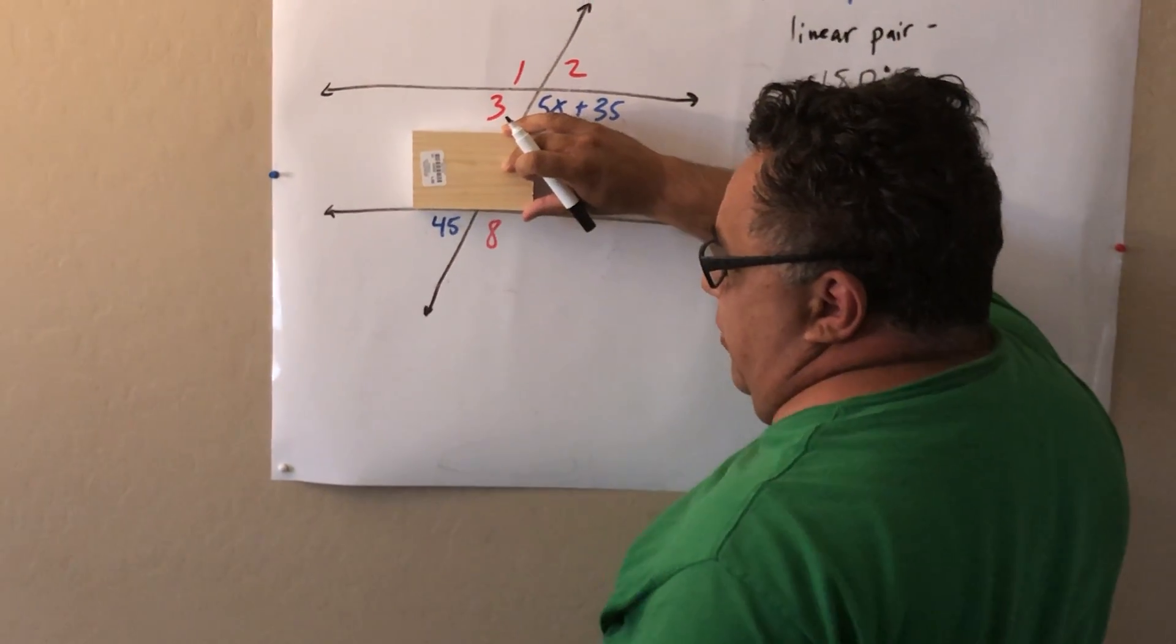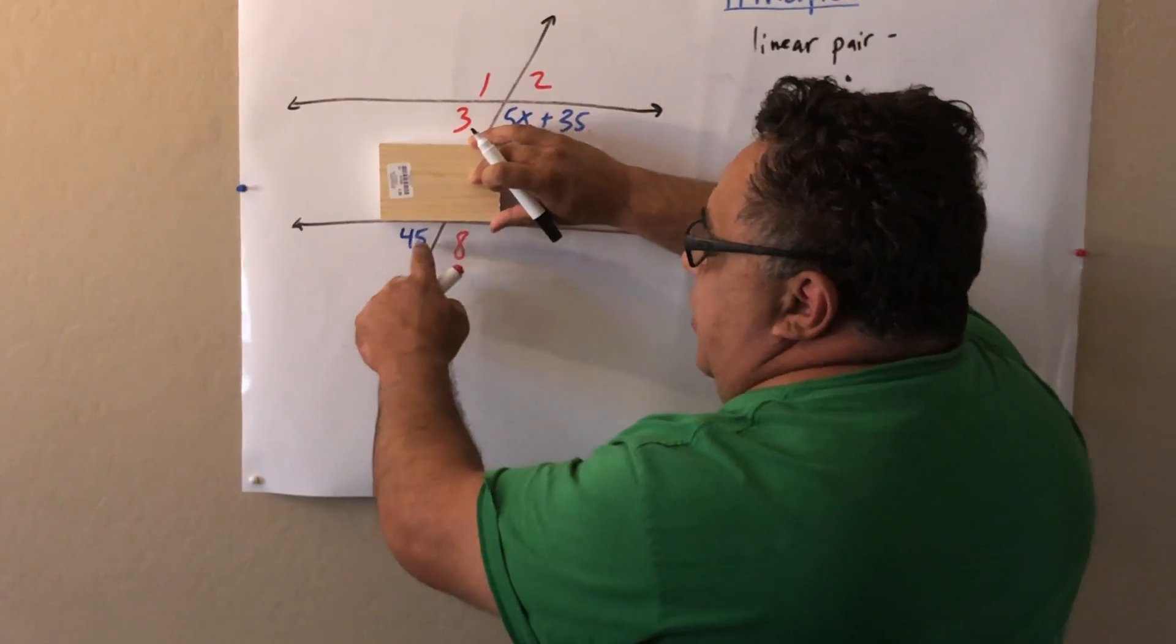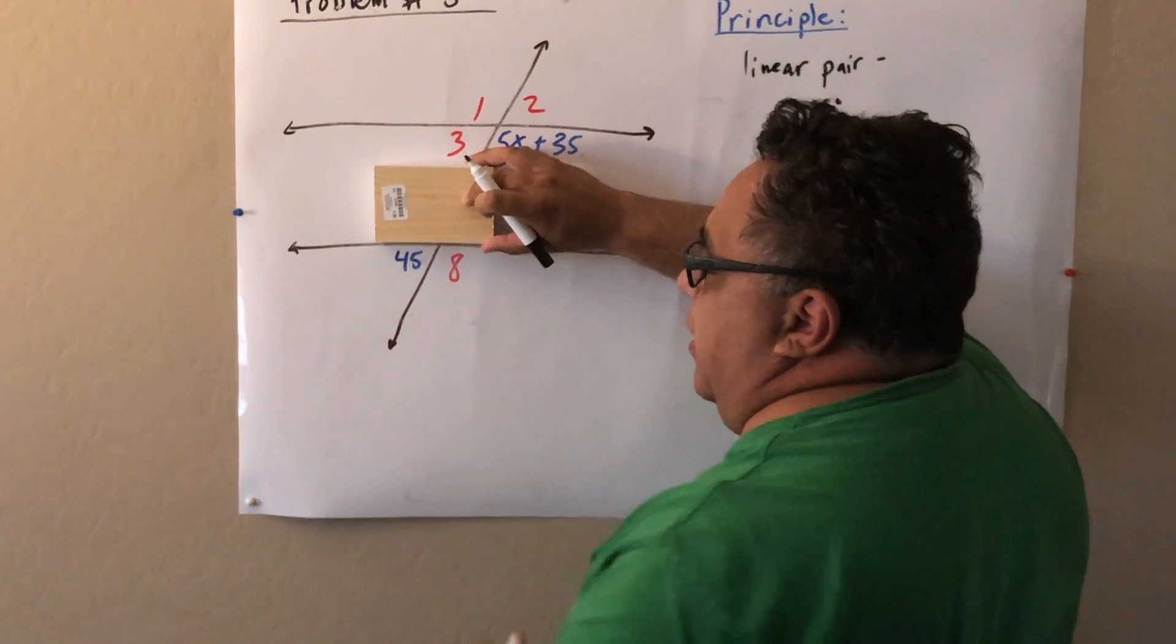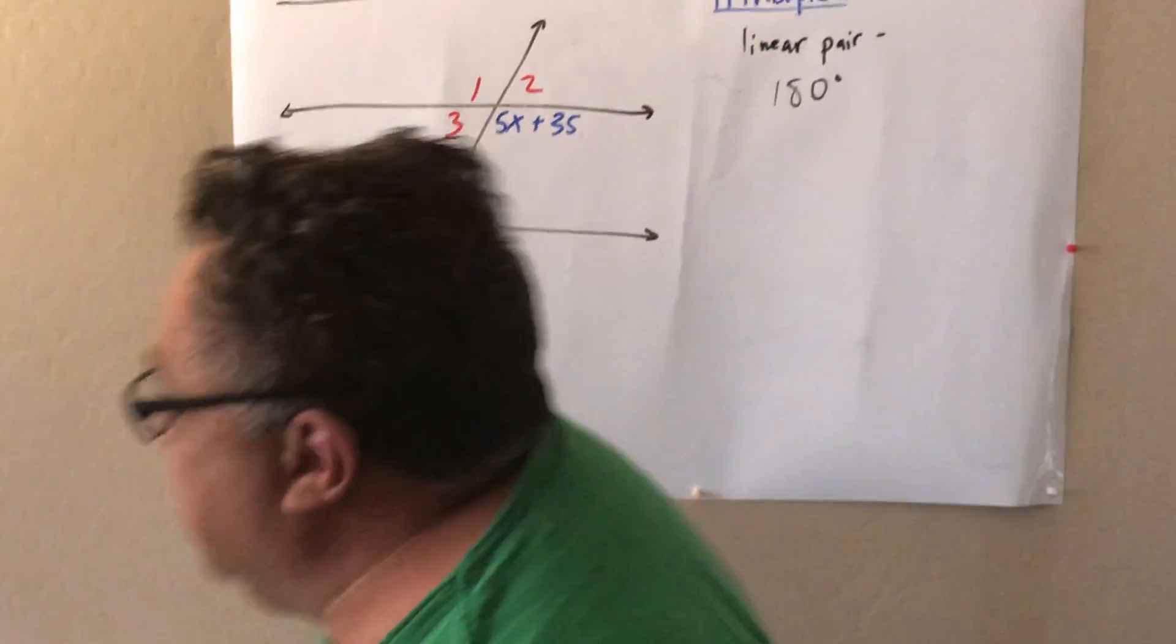So we have that perfect right here. We have a straight line on top here where I'm holding this. And we have two angles right here, 45 and angle 8. Those two angles added together should be 180 degrees.